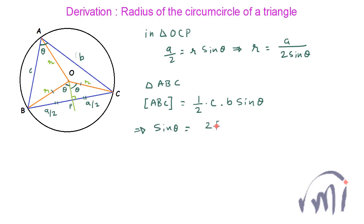This can be written as A over 2 sin theta, so R equals A divided by 2 sin theta. Substituting sin theta, we get R equals A divided by 2 times 2 times the area of triangle ABC divided by CB, which simplifies to R equals ABC divided by 4 times the area of the triangle ABC.